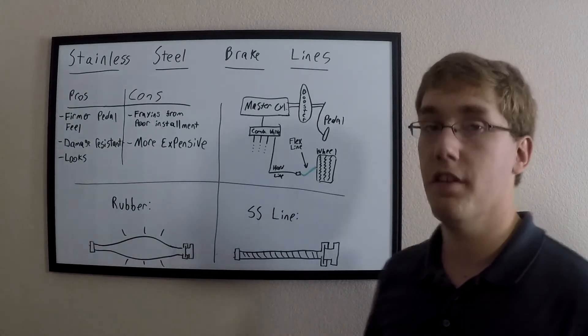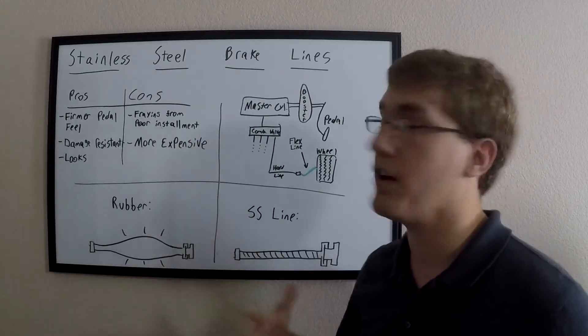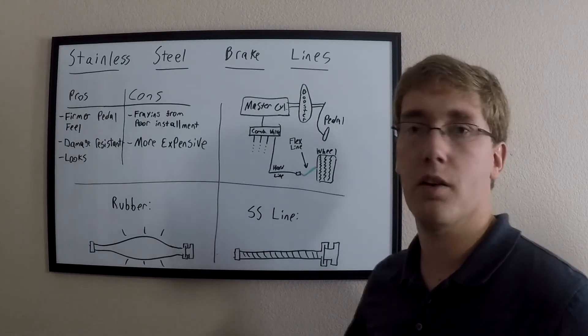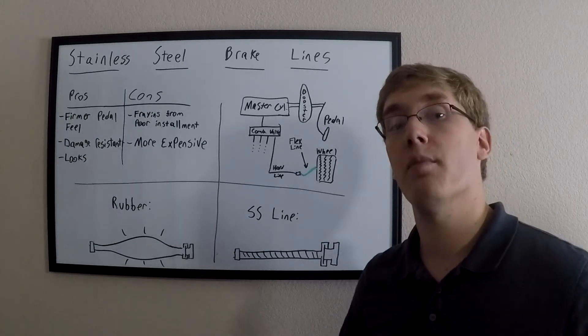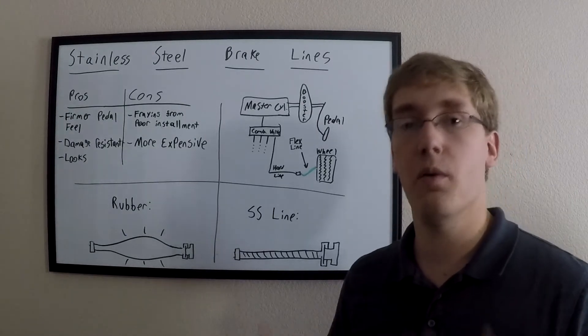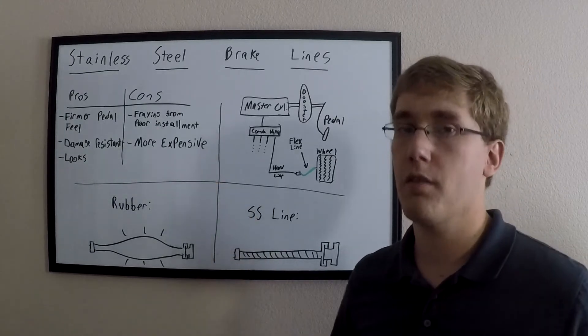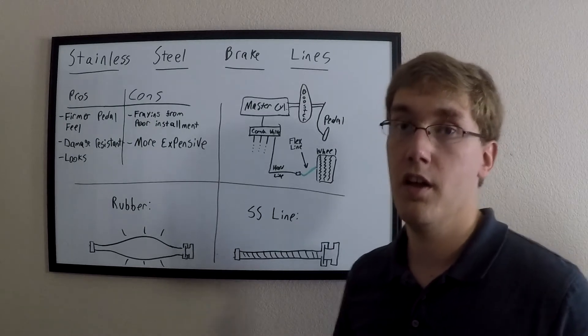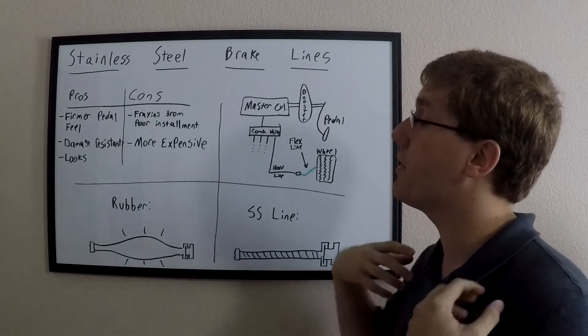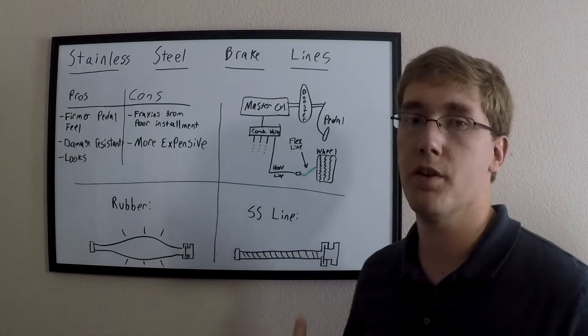But there are, of course, disadvantages to stainless steel lines as well. One of those being the potential for fraying inside the line. If you don't install the brake lines properly and they rub up against a crossmember or something, it's possible for those lines to become torn or frayed. And that can cause more damage, whereas OEM rubber hoses don't have that sort of problem. And of course, stainless steel lines are more expensive than rubber hoses. Rubber hoses are cheap. That's why the factories end up using those normally on their cars. But with stainless steel lines, there's a little more work that goes into their construction, so they're more expensive than your OEM hoses.